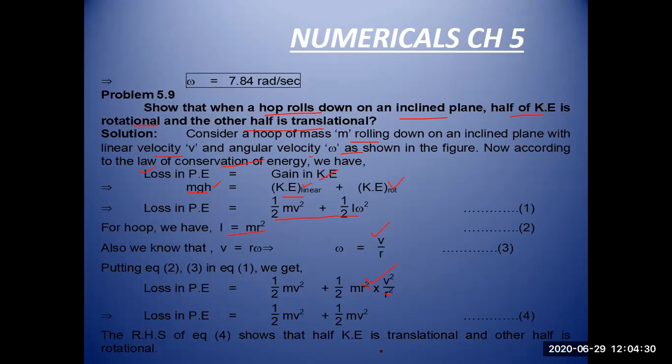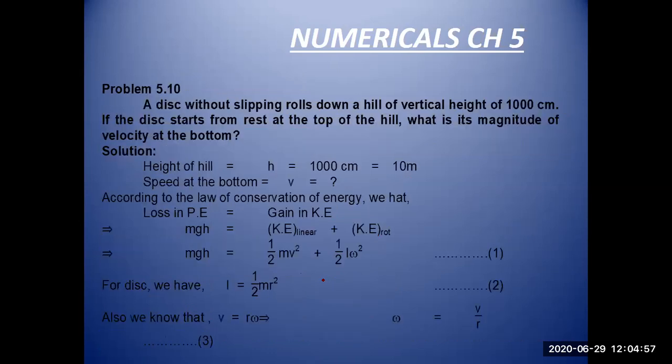Half kinetic energy is translational and half is rotational. This amount of energy, this portion is for translational, and this portion is for rotational. This clearly shows that half of the potential energy is converted into translational kinetic energy and half is converted into rotational kinetic energy. Thank you very much.